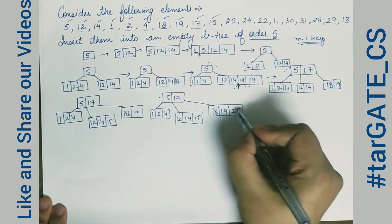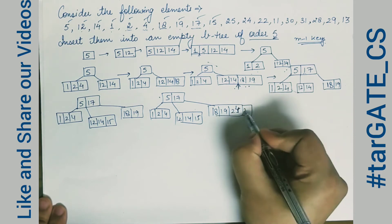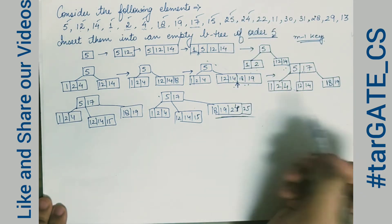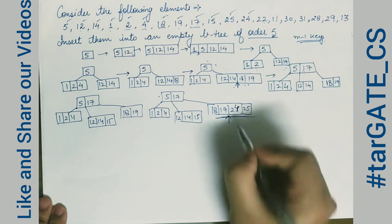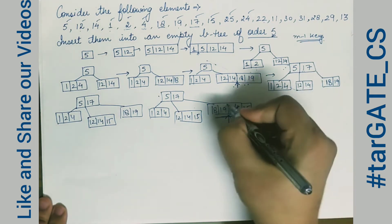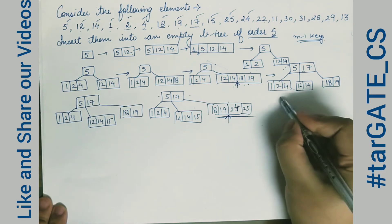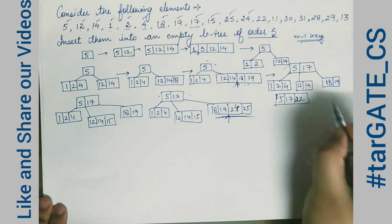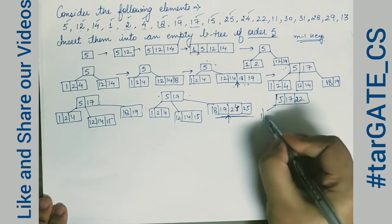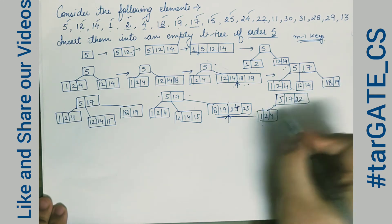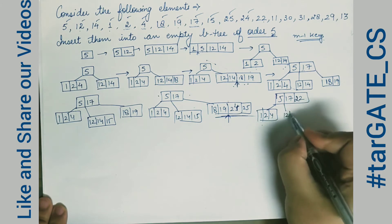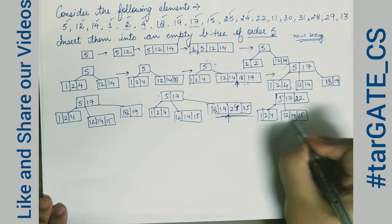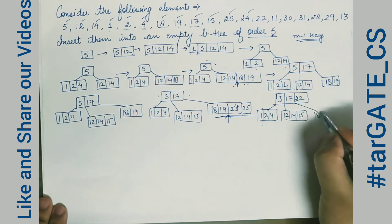We skip a step and insert 24, after which the right side is full again. When we insert 22, a split is needed. 22 goes up to the root node, making it 15, 17, and 22. On the left we have 1, 2, 4; in the next node 12, 14, 15; then 18 and 19; then 24 and 25.